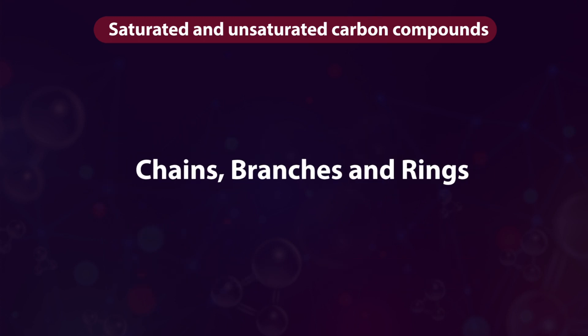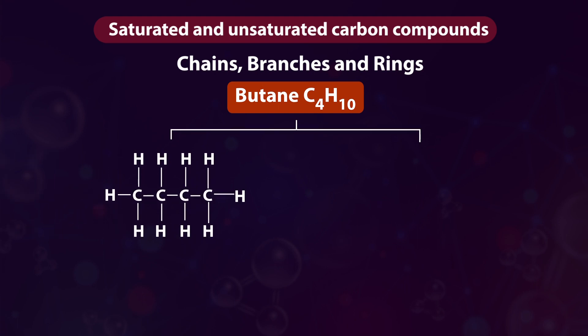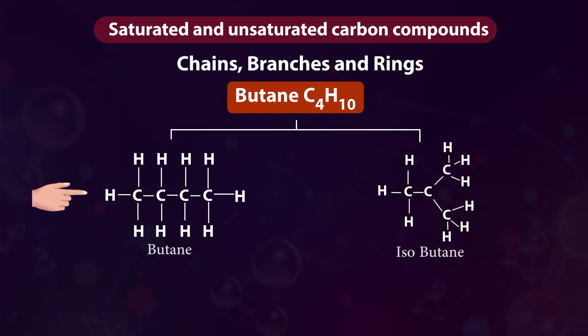Chains, branches, and rings. Butane C4H10 — we can write its structure in two ways: a straight chain structure and a branched chain structure.